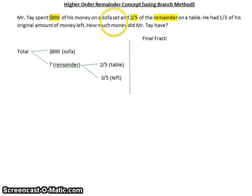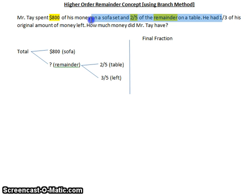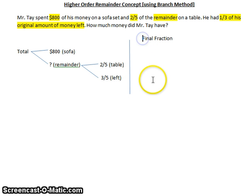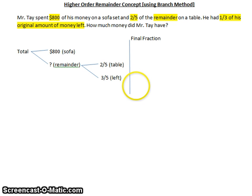He had one-third of his original amount of money left. Every time we talk about the original amount of money, we are talking about the final fraction. The final fraction is always about the total amount of money. So one-third is actually the final fraction for the amount of money left — one-third of the total amount of money. 'Original amount of money' means final fraction.